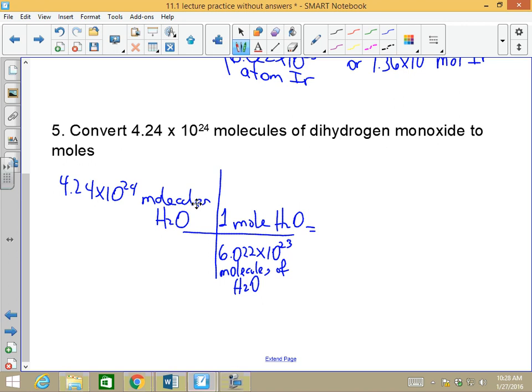Multiply 4.24 times 10 to the 24th molecules times 1, which makes no difference in this case, divided by 6.022 times 10 to the 23rd, and you end up with 7.04 moles of H2O.